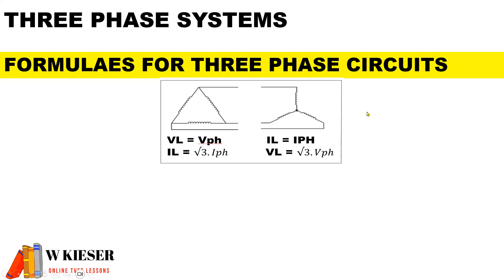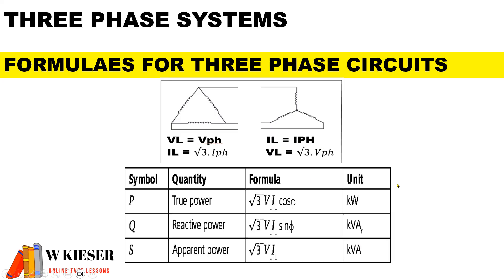Just to show you the formulas for three phase: for delta VL is equal to V phase, and for star IL is equal to I phase. For our formulas you'll notice we multiply by square root 3 inside the formulas. However everything else stays the same.